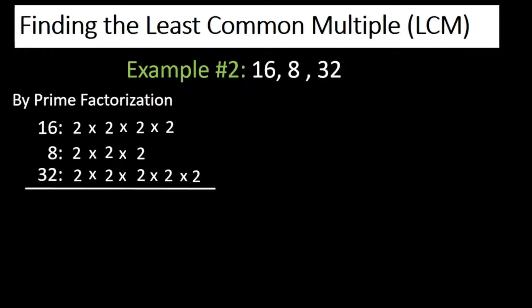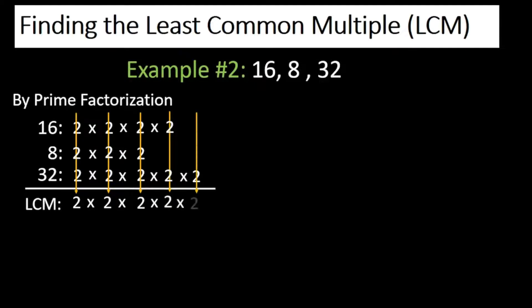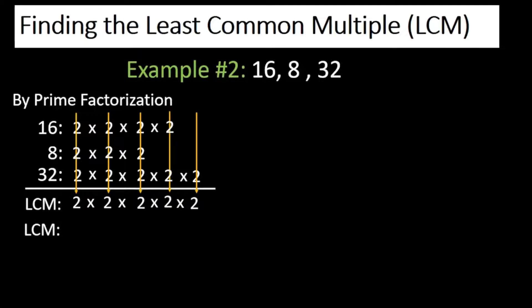The next thing you need to do is simply bring down these prime factors. So we have 2 times 2 times 2 times 2 times 2. Multiplying: 2 times 2 is 4, times 2 is 8, times 2 is 16, times 2 is 32. Therefore the least common multiple of 16, 8, and 32 is 32.